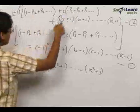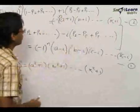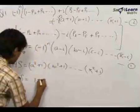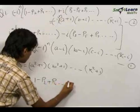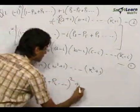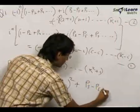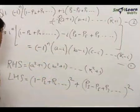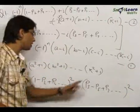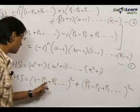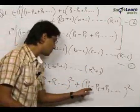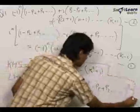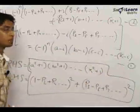The left-hand side becomes: (1 − p₂ + p₄ + ...)² + (p₁ − p₃ + p₅ − ...)². Equating left and right-hand sides: (1+a²)(1+b²)...(1+k²) = (1 − p₂ + p₄ − ...)² + (p₁ − p₃ + p₅ − ...)². This is the desired result which we needed to prove.